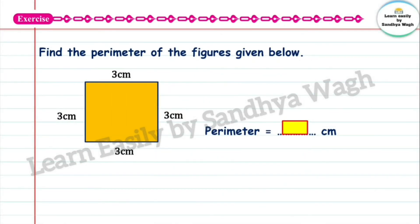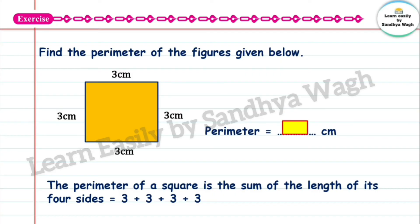This is a square and a square has four equal sides. Each side of the square is 3 centimetres. The perimeter of a square is the sum of the length of its four sides. So 3 plus 3 plus 3 plus 3 is equal to 12 centimetres. The perimeter of this square is 12 centimetres.